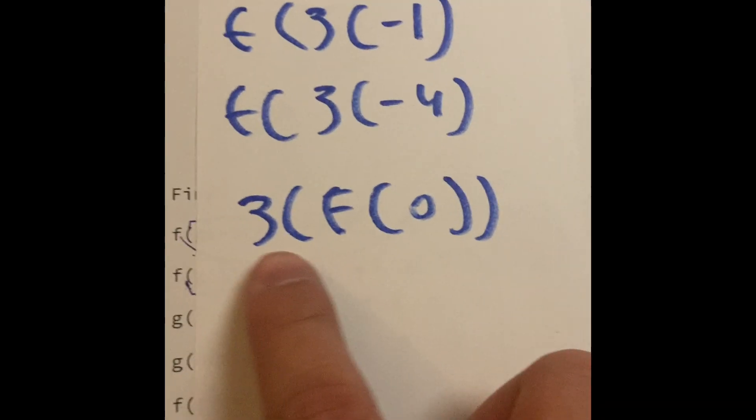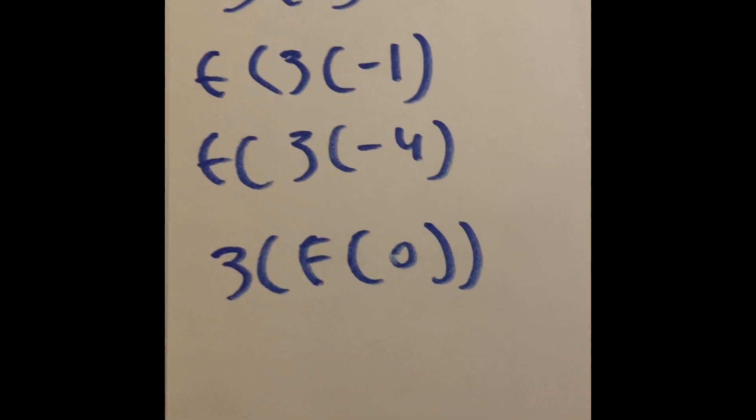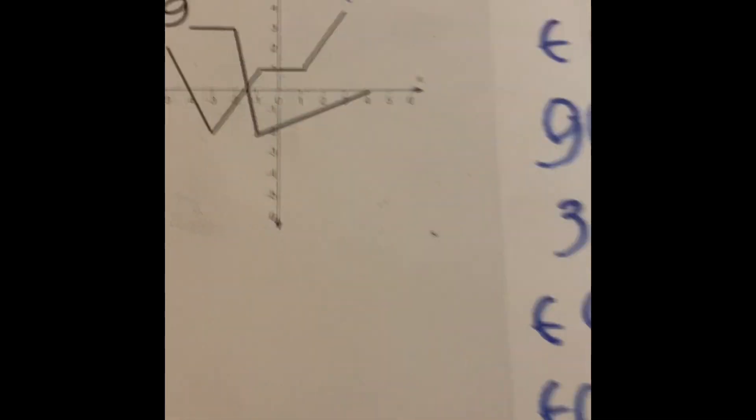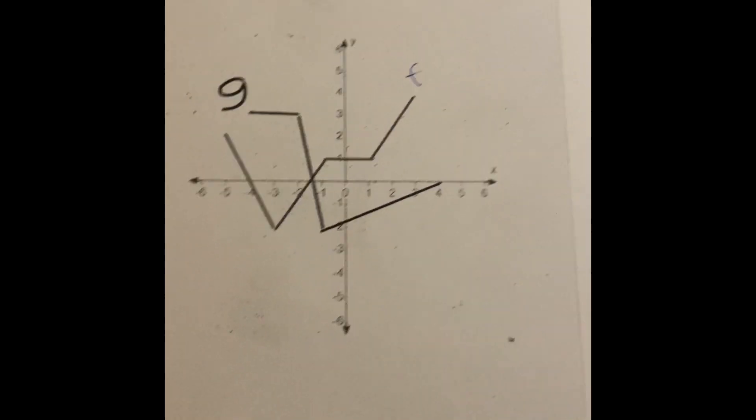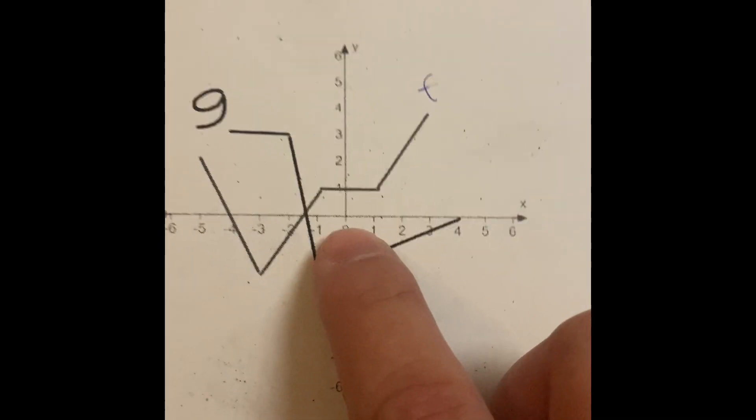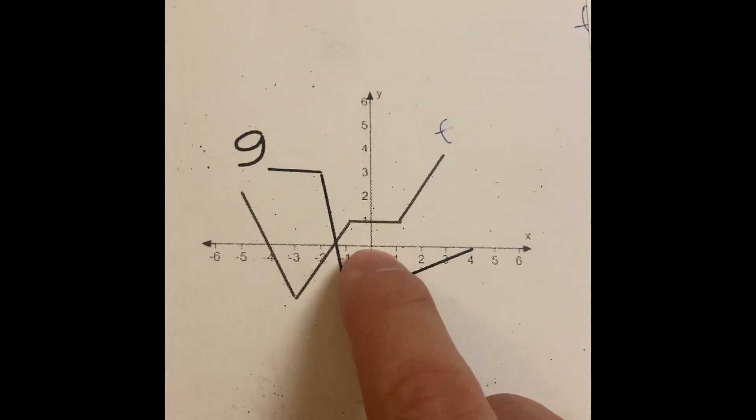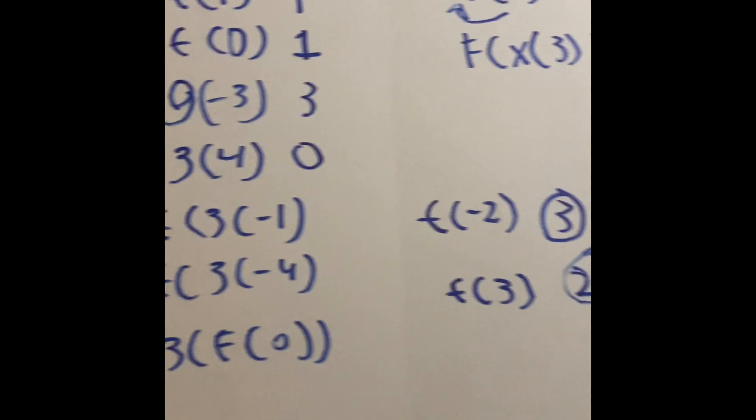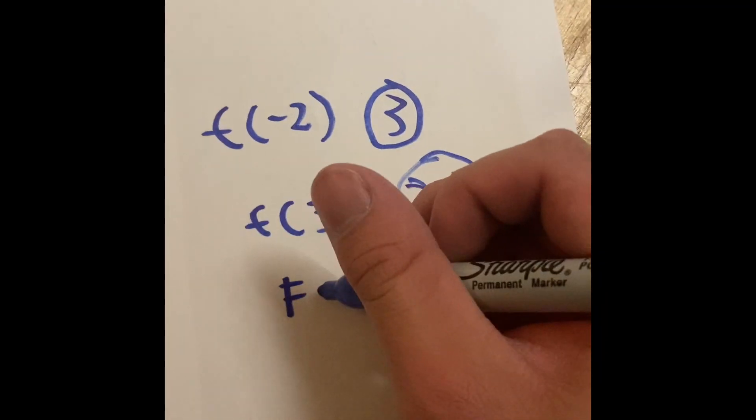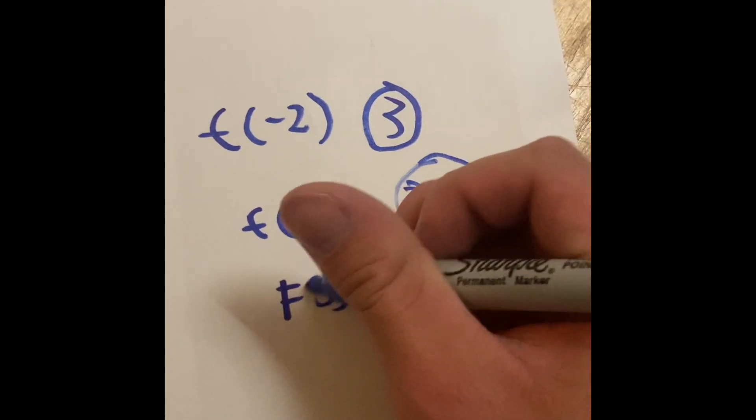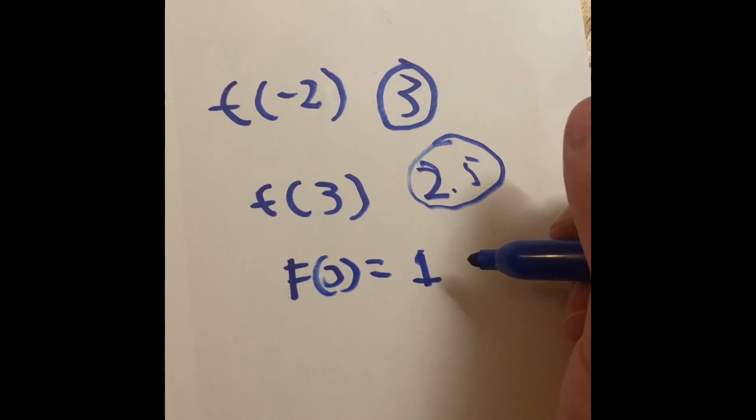The last one is going to be g of f of zero. And what the crazy thing about that is, is we start with the f line because it's inside of the g line as functions. So the function of zero of f, zero, one. So when we go from zero, which is grand central station, go to number one. So station number one for the f line is going to be one. So the f of zero is going to equal to one. So one is our station. But we need to transfer to another train.